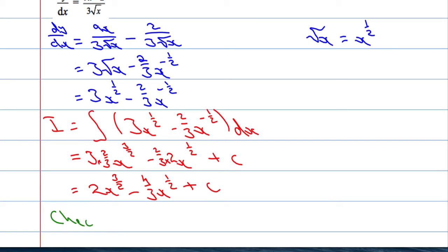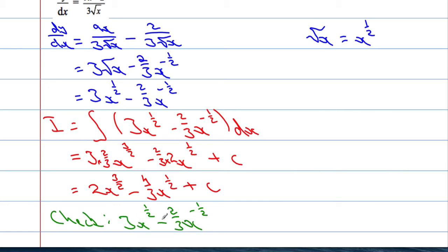Let's check, because that was a fairly tricky one. Differentiating: multiply by 3/2, so 2 times 3/2 is 3, decrease the power by 1, and we get 3x^(1/2). Then multiply by 1/2, so 4/3 times 1/2 is 4/6 which is 2/3, decreasing that power by 1 gives x^(−1/2). The derivative of a constant is zero. So we get 3x^(1/2) minus 2/3 · x^(−1/2), which is exactly what we had. So that looks good.